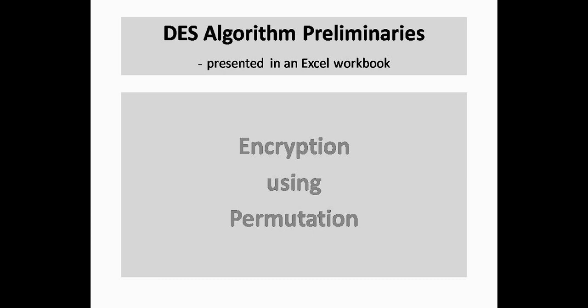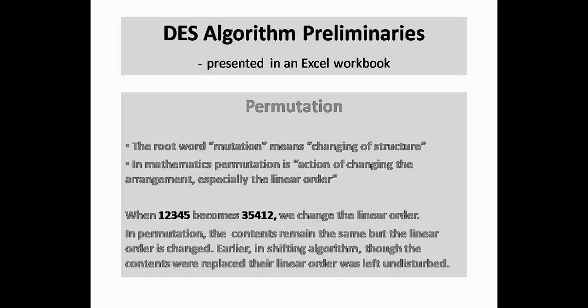Let's move on to permuting which is another important factor in encryption. The root word mutation means changing of the structure. In mathematics, permutation is the action of changing the arrangement, especially the linear order. When 1 2 3 4 5 becomes 3 5 4 1 2, we change the linear order. So the difference between permutation and shifting is that in permutation numbers are jumbled. In shifting, though we move the alphabets right or left, the linear order is maintained.